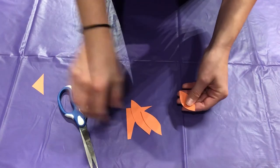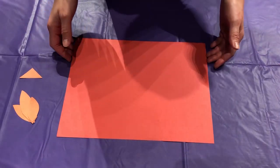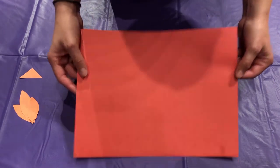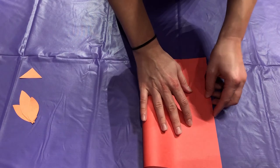So those are ready for when we're finished with the bird. All right now we're going to make the bird. What you're gonna do is fold your paper hamburger style just like that.